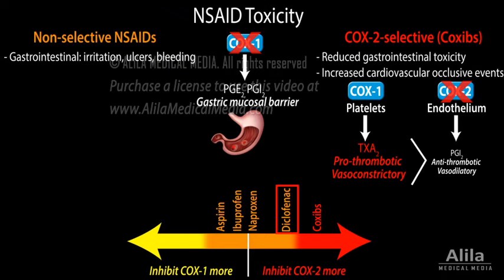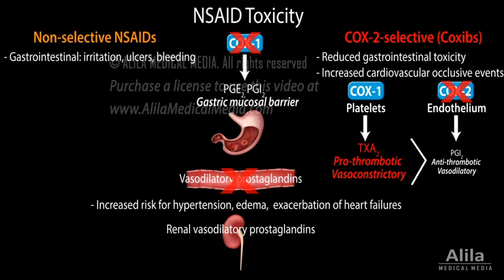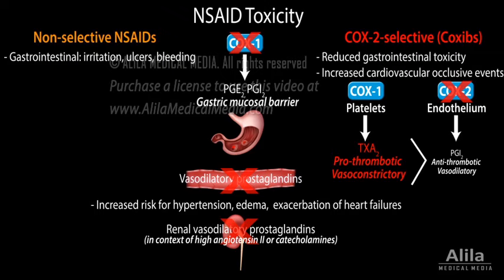Some non-selective NSAIDs also exhibit various levels of cardiovascular toxicity, depending on their COX2 vs. COX1 inhibition ratio. Suppression of physiological vasodilatory prostaglandins by NSAIDs may increase the risk for hypertension, edema, and exacerbate pre-existing heart failure. Inhibition of renal vasodilatory prostaglandins, in the context of circulatory stress, may reduce renal blood flow and glomerular filtration rate, and ultimately cause renal ischemia or failure.